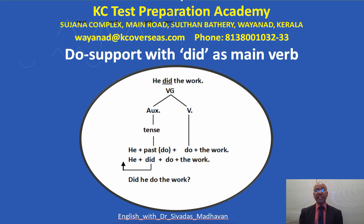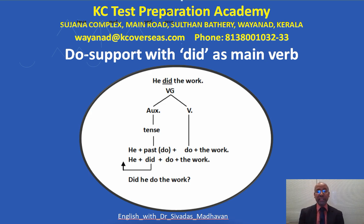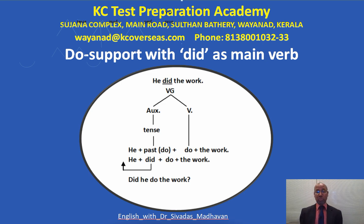The example given here is the sentence: HE DID THE WORK. In this sentence, DID is the main verb and it is the verb group, and it consists of auxiliary and main verb. The main verb is DO and auxiliary consists of tense, and tense is past in this sentence. There is no other auxiliary and we have to get DO support to make it a question.